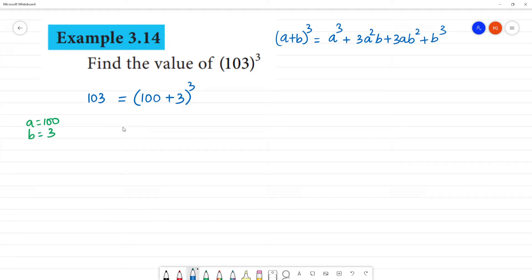If we substitute it, first term is 100³ plus 3 times 100² times 3, plus 3 times 100 times 3², plus 3³.